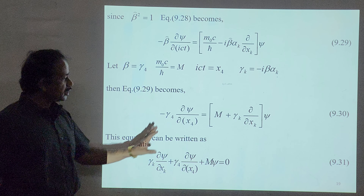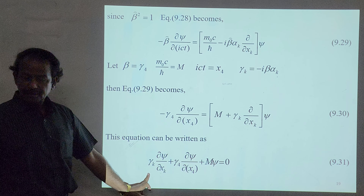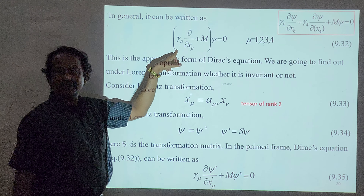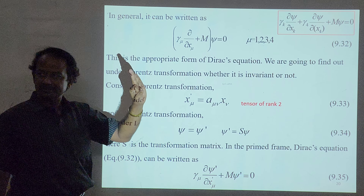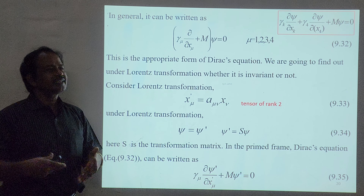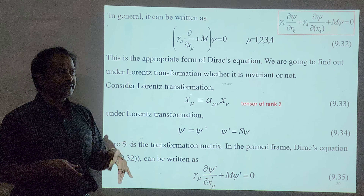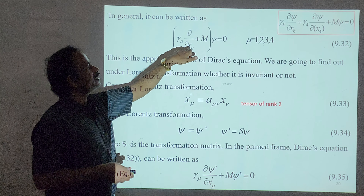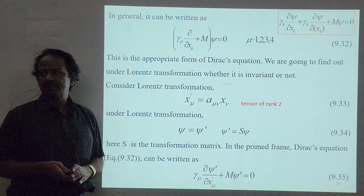Combining both sides and using the Einstein summation convention — where repeated indices imply summation — with μ = 1, 2, 3, 4 and k = 1, 2, 3, we write the covariant form of the Dirac equation as: γ_μ (∂/∂x_μ) + m) ψ = 0. This is Dirac's equation in the relativistic covariant form, which we already obtained previously.